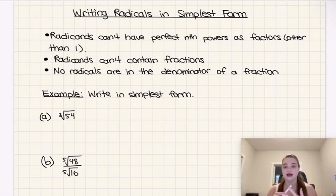So no 4, no 9, no 16, no 25, etc. Or same thing with cube root. Then there couldn't be any 8, right? 2 cubed is 8, or 27, 3 cubed is 27, etc.